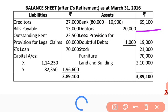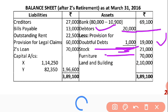Debtors were 20,000 but provision was increased by 1,000, so debtors become 19,000. Stock was 21,000 — no change. Furniture was depreciated by 17,500, so it goes from 1,87,500 down to 1,70,000. Land and building was appreciated by 5%, so from 2,00,000 it becomes 2,10,000.